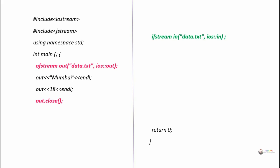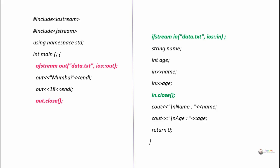By using the ifstream object 'in', we can perform read operations. We declare two variables, name and age, and use the extraction operator to read from the input stream, storing details in name and age. Then we close the input stream and display the details read from the file. In both cases — ofstream and ifstream — we open the file using the constructor, mentioning the file name and the input/output mode required.